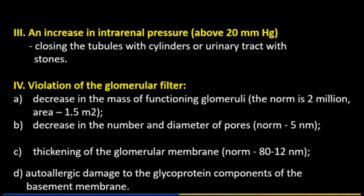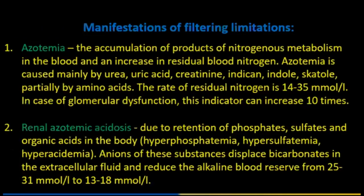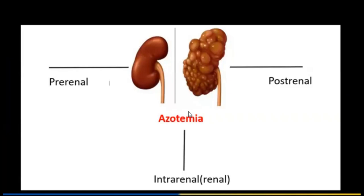Violation of the glomerular filter: decrease in the mass of functioning glomeruli, decrease in the number and diameter of pores, and thickening of the glomerular membrane (normal: 80, 20, 12 nanometers). Auto-allergic damage to glycoprotein components of the basement membrane. Manifestations of filtering limitations include azotemia and renal azotemic acidosis. Azotemia has three causes: pre-renal, intrarenal, and post-renal.